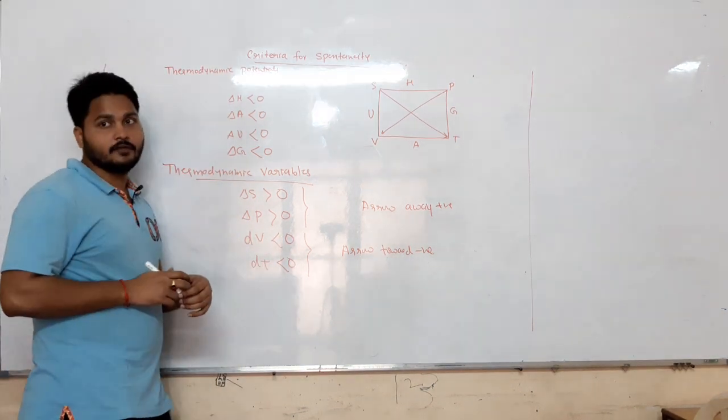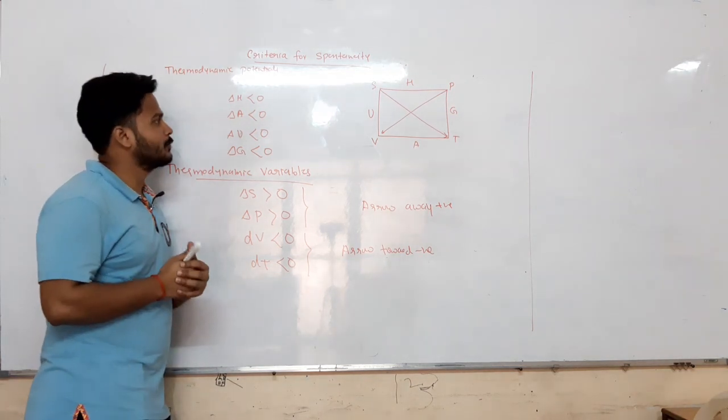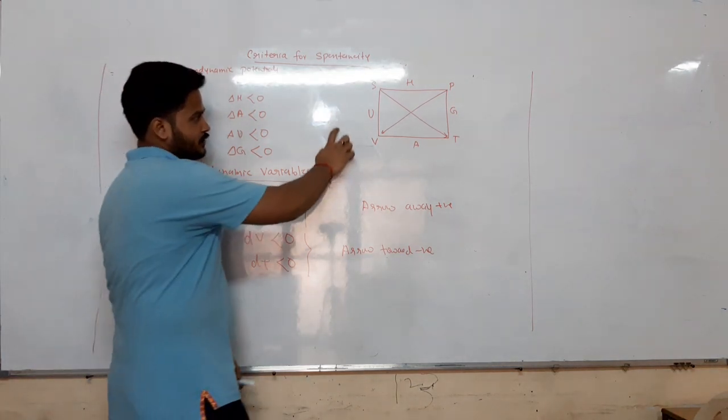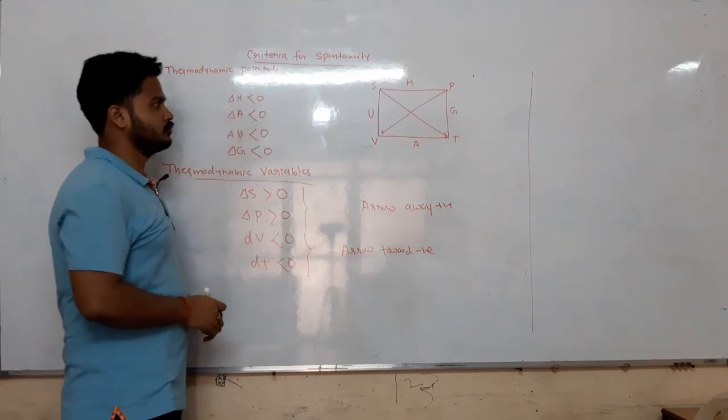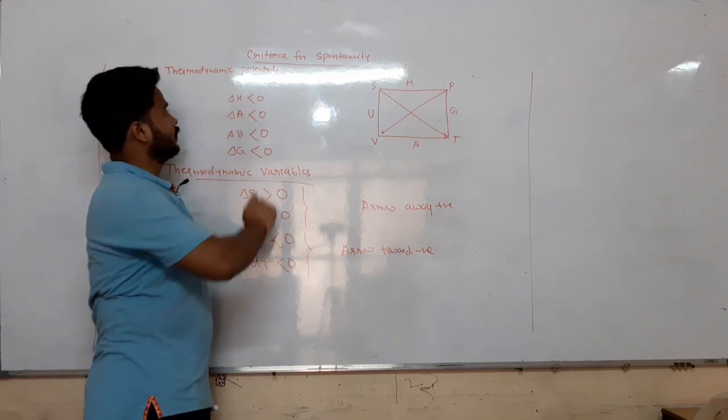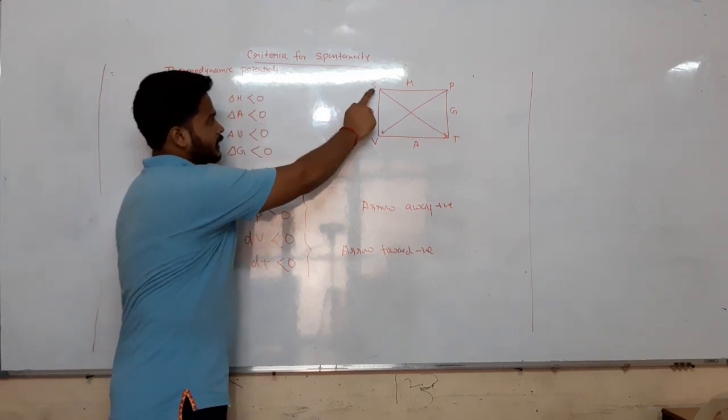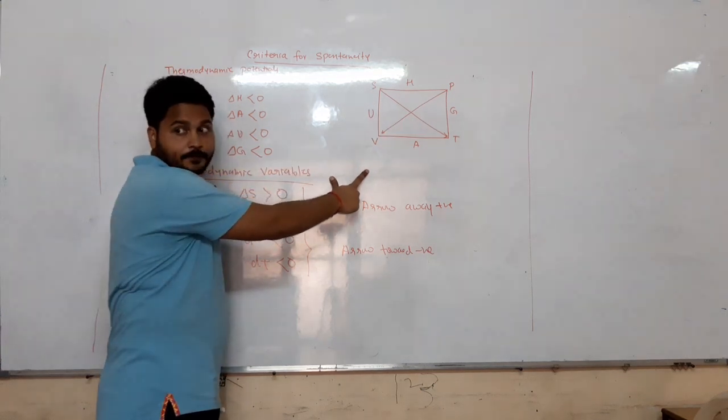Today we are going to talk about spontaneity for thermodynamic variables and thermodynamic potentials. We are supposed to make this square - this is the shortcut option. Here is what we have: S, P, T, and V. These are the state variables.